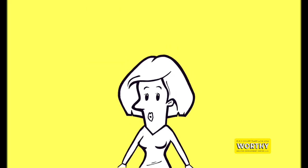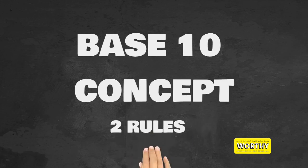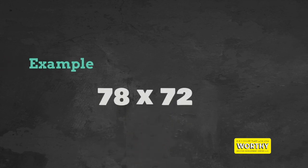Let's begin with base 10 concept. Base 10 concept in multiplying two digit numbers. There's two rules in order for you to use this trick. Let's use 78 multiplied by 72 as an example.